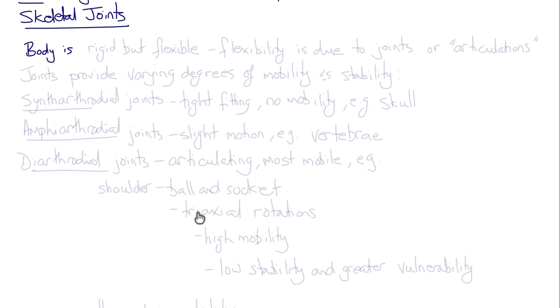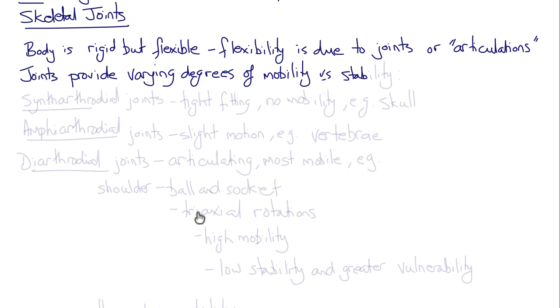So many problems involve the musculoskeletal system and skeletal joints. The body is rigid but flexible, and the flexibility is due to our joints or articulations. Joints provide varying degrees of mobility versus stability.